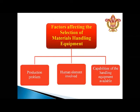The factors that affect the selection of material handling equipment are: first, production problems; second, human element involved; and third, capabilities of the handling equipment available. These three factors — production problem, human element, and capabilities of the handling equipment — are the main factors for the selection of material handling equipment.